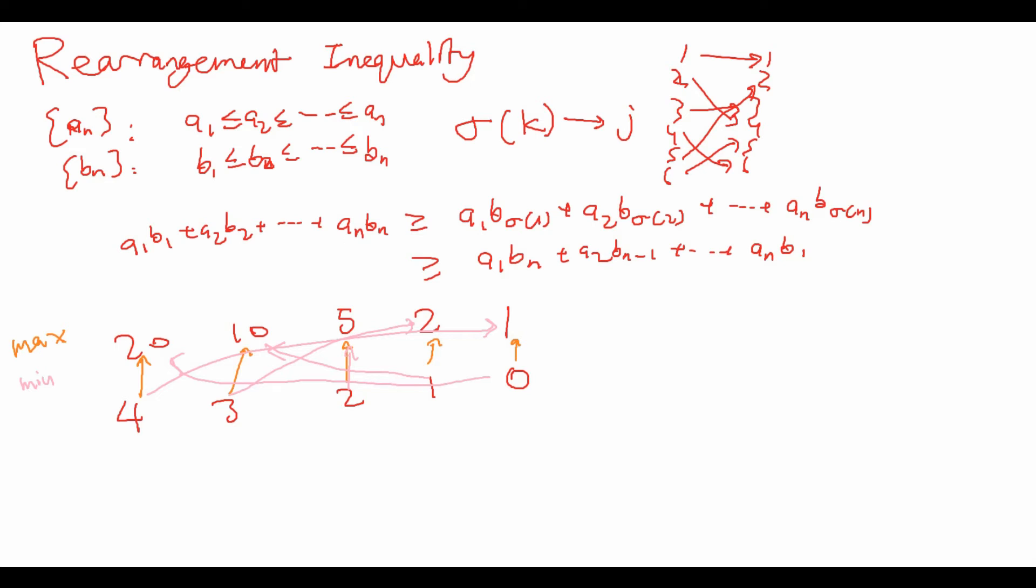And finally, let's suppose that we just randomly pick whatever pleases us. Well, no matter how we randomly pick, we are guaranteed that the value of the money that we get will be less than or equal to the maximum possible and greater than or equal to the minimum possible. So this random is precisely this sigma stuff in the middle. It's just some random way to match the number of values to the dollar bill values. This inequality actually just says to maximize this, match big with big; to minimize it, match big with small; and anything in between is always going to be between these two values.